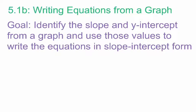Our second lesson in Module 5, Lesson 1, is on writing equations from a graph. Our goal in this lesson is to identify the slope and y-intercept from a graph and use those values to write the equations of that line in slope-intercept form. Nothing in this lesson is really new to us — these are all skills we should already know from Module 4 — but it's just a matter of tying it all together.